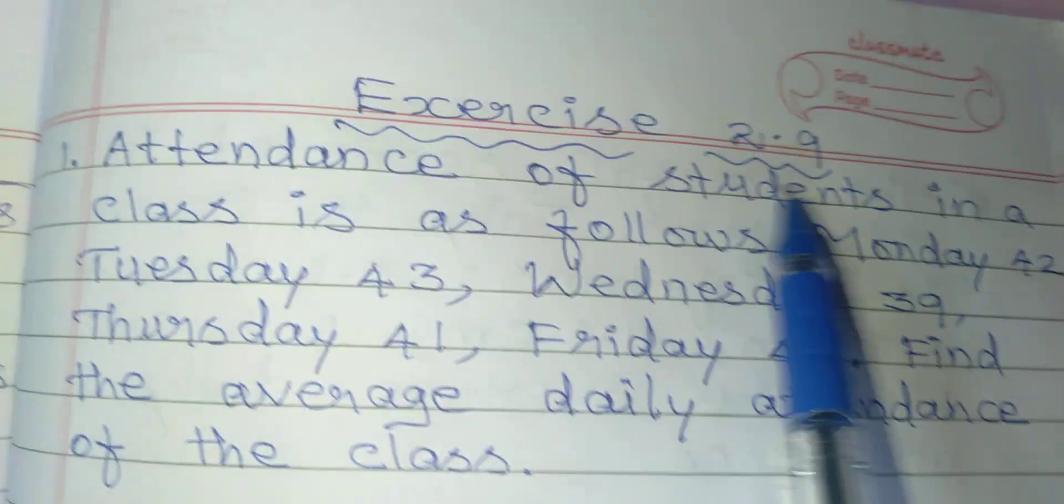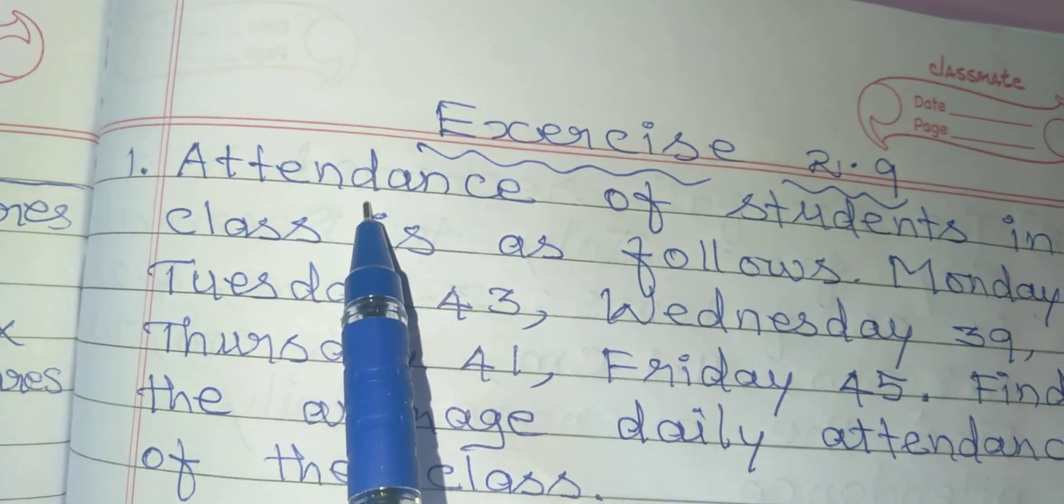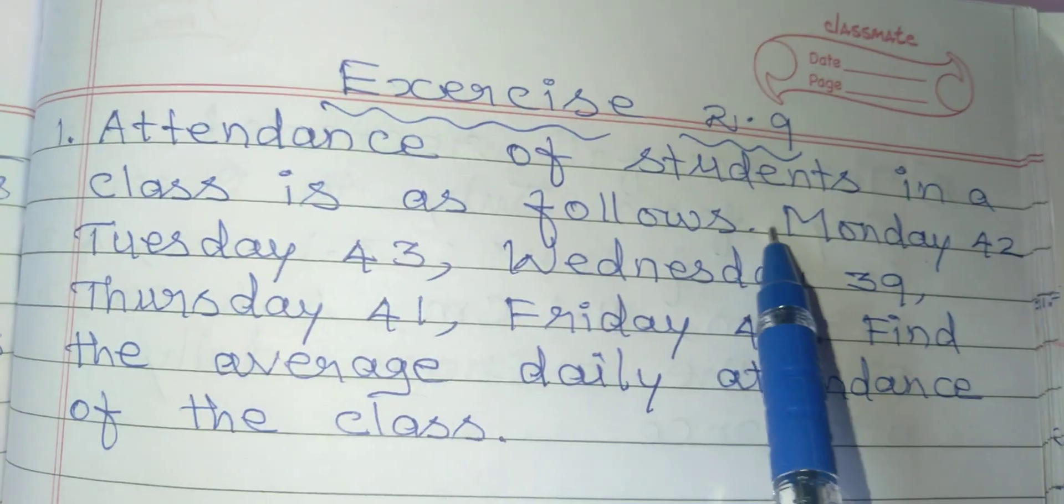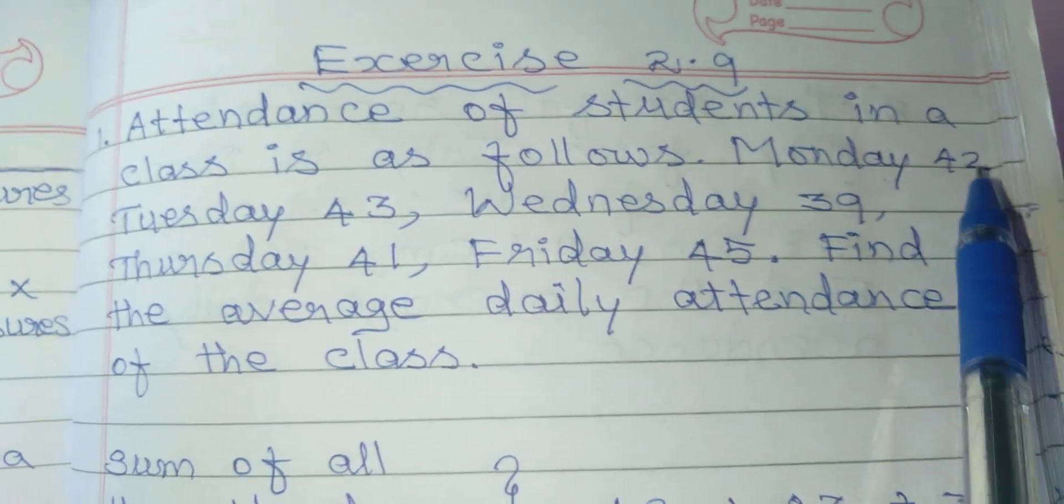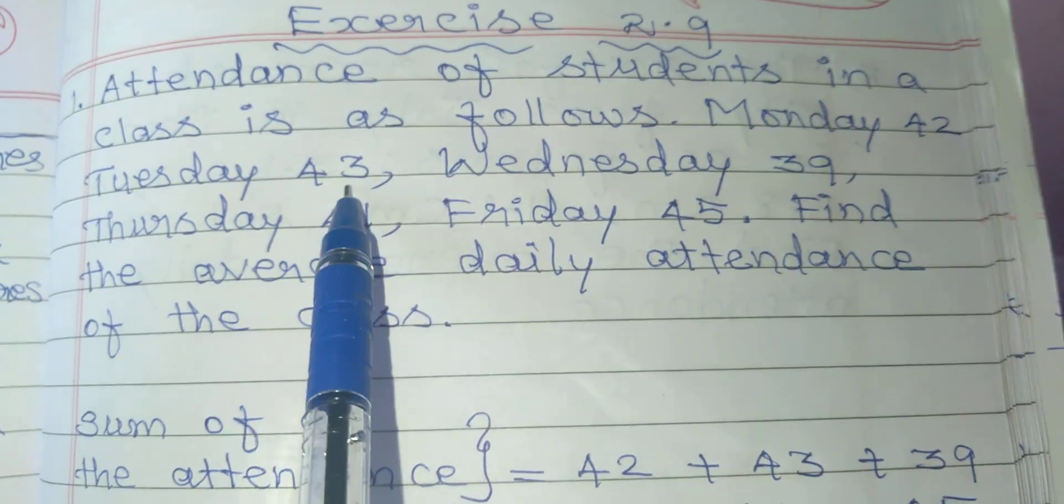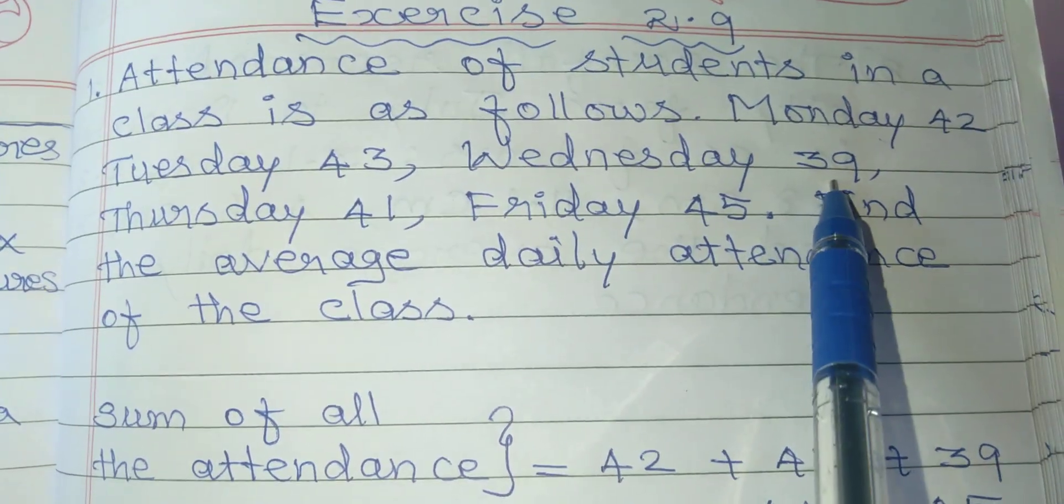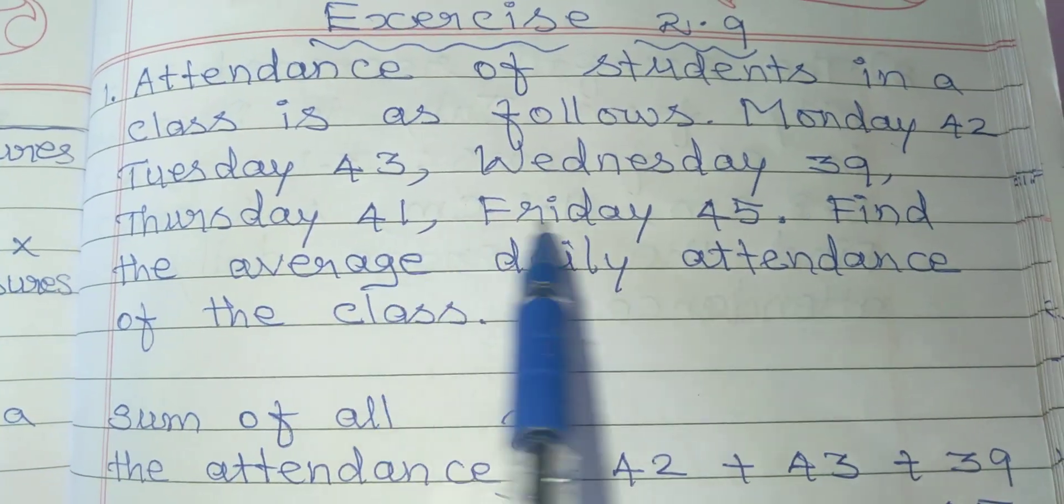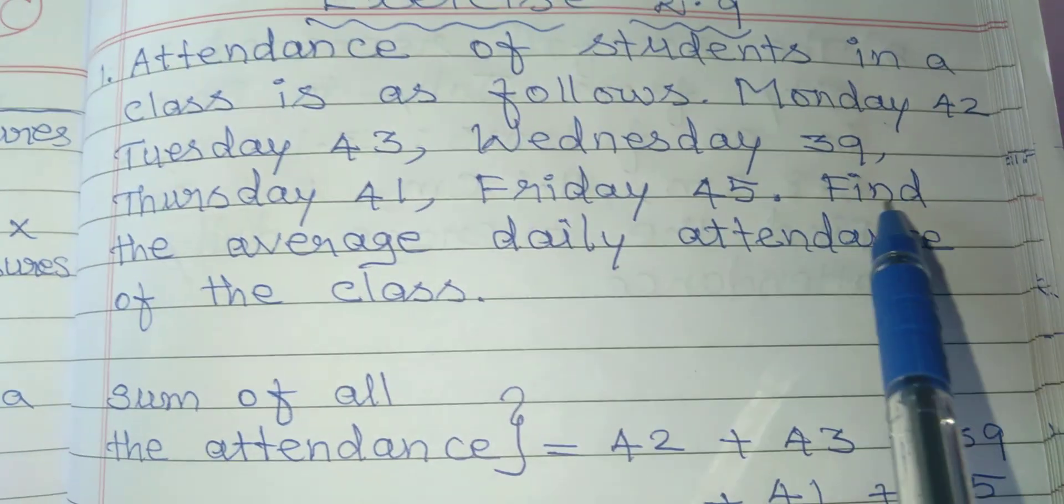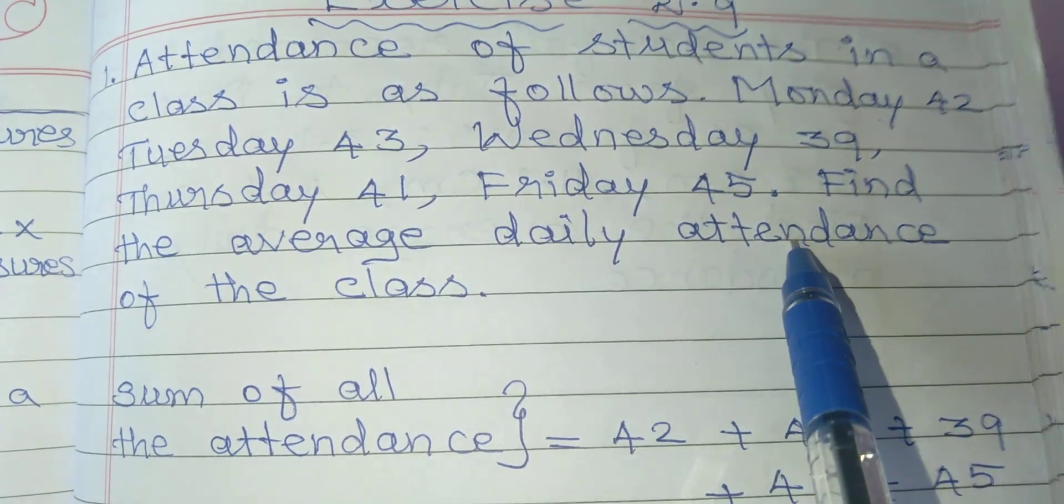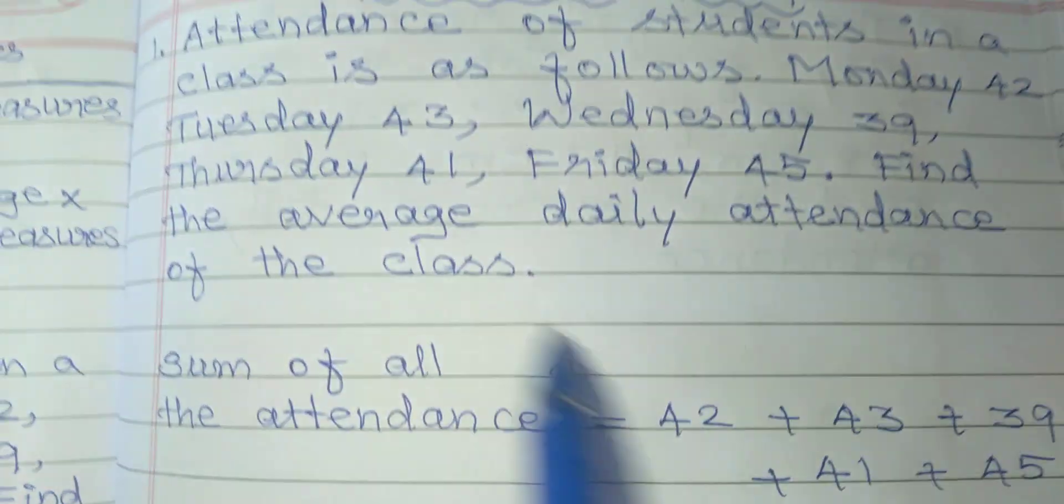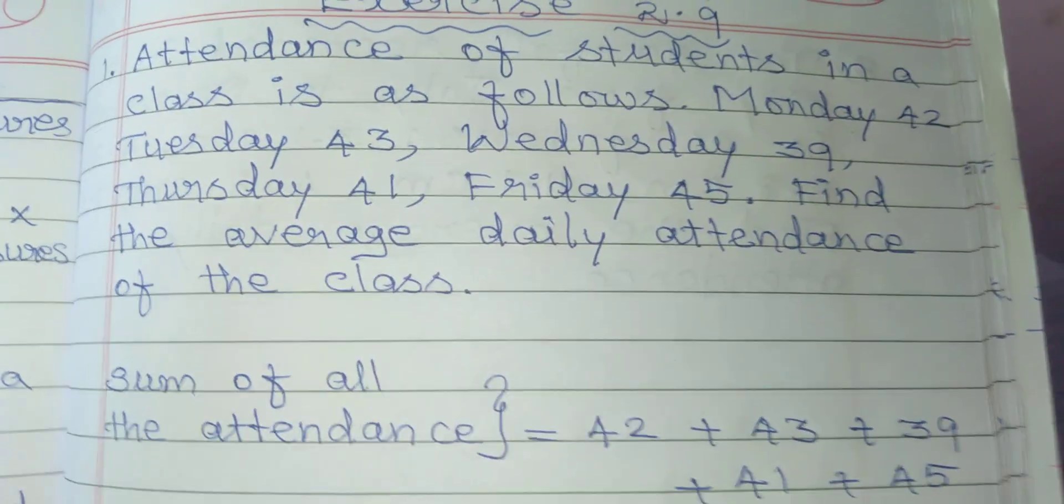Exercise 2.9, Question Number 1. Attendance of students in a class is as follows: Monday 42, Tuesday 43, Wednesday 39, Thursday 41, Friday 45. Find the average daily attendance of the class.